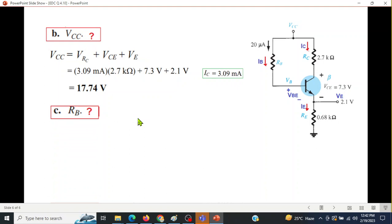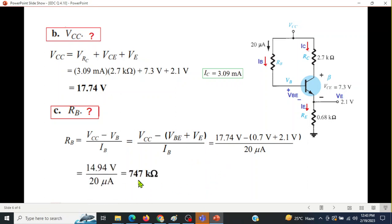And part C is RB. Just like the previous example, RB is VCC minus VB divided by IB, and VB we know as VBE plus VE. We'll put in the values of all, and we find the answer to be 747 kilo ohm.